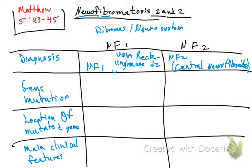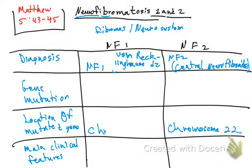I'm going to jump to the chromosome location of the mutated gene because it's easier to remember. Neurofibromatosis type 2 is on chromosome 22. Neurofibromatosis type 1 is on chromosome 17. The memory trick: NF1 has a '1' and chromosome 17 has two 1s; NF2 has a '2' and chromosome 22 has two 2s.